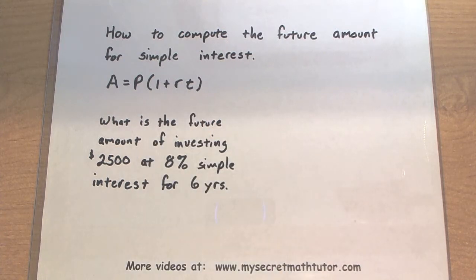So let's look at the example and see where all of the pieces go. So I want to know, what is the future amount of investing $2,500 at 8% interest for 6 years?